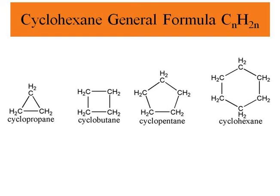For cycloalkanes, the general formula is CₙH₂ₙ. Examples include cyclopropane, cyclobutane, cyclopentane, and cyclohexane. As you can see, all of them have a ring, and these are the four basic compounds in the cycloalkane family.